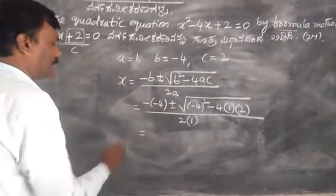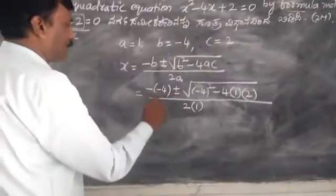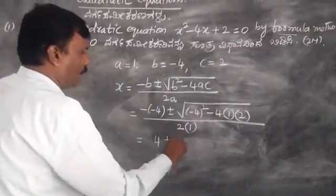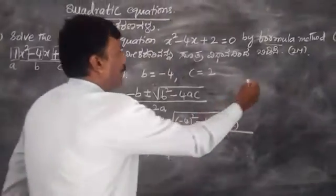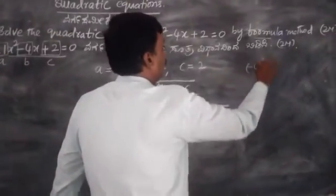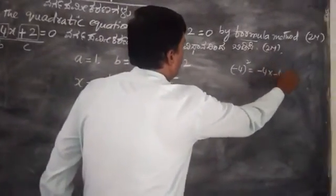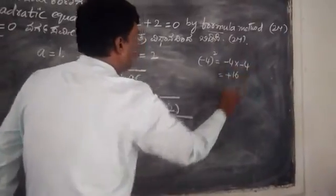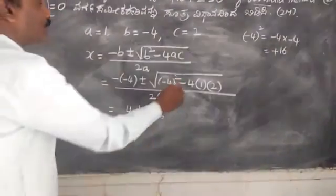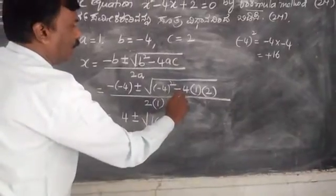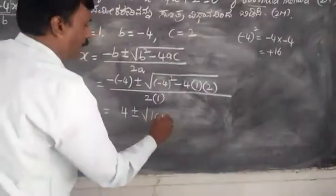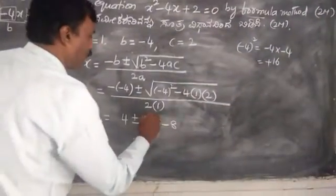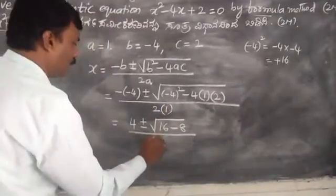Next step is simplification. Minus into minus gives plus 4. So we get 4 plus or minus the square root of minus 4 times minus 4, which is 16, minus 4 times 1 times 2, which is 8, divided by 2.